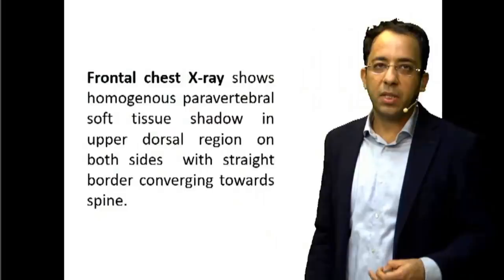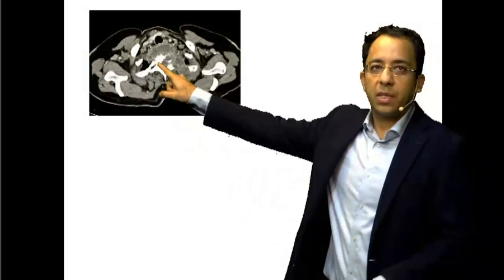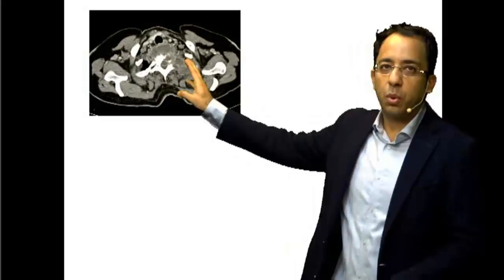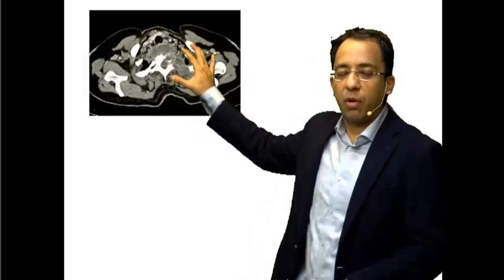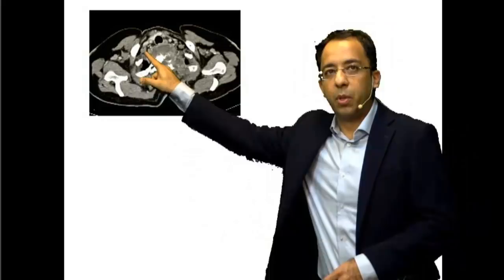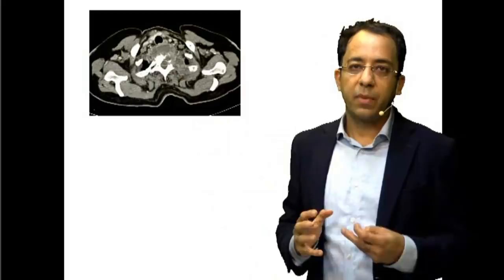On the CT scan, you can see this is the thoracic vertebra, and there is osteolytic destruction of the vertebra. Along with this, you can see paravertebral soft tissue, and that soft tissue has a characteristic rim enhancement — the center is hypodense with rim enhancement. Rim enhancement in a soft tissue lesion means abscess. So we are saying there is lytic destruction of the vertebra with a prevertebral/paravertebral abscess.